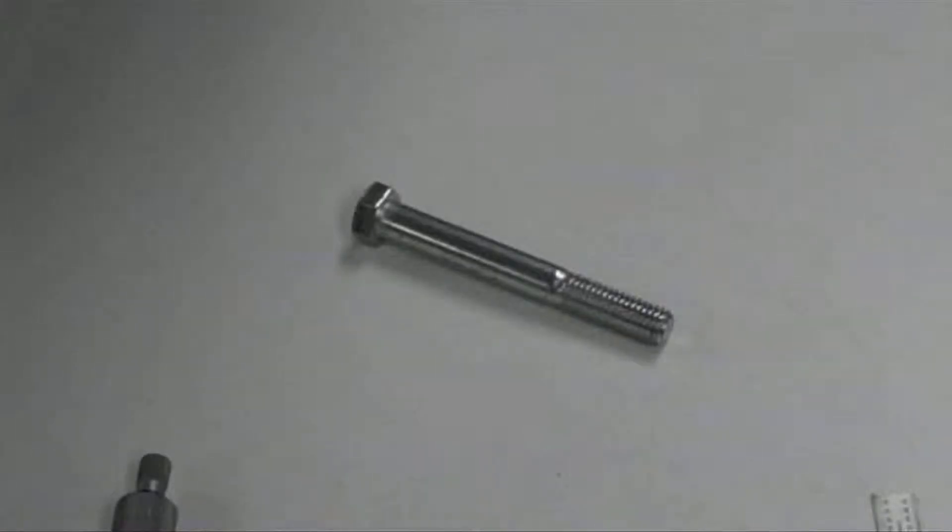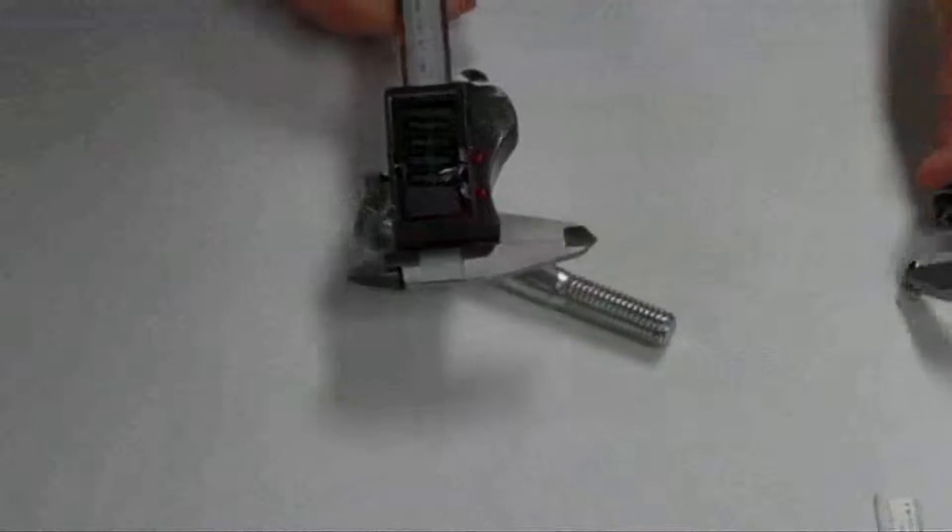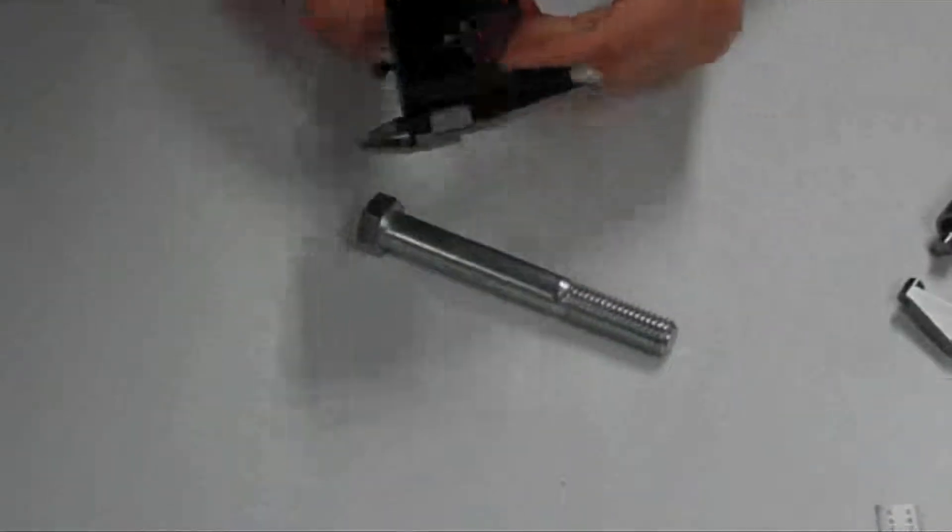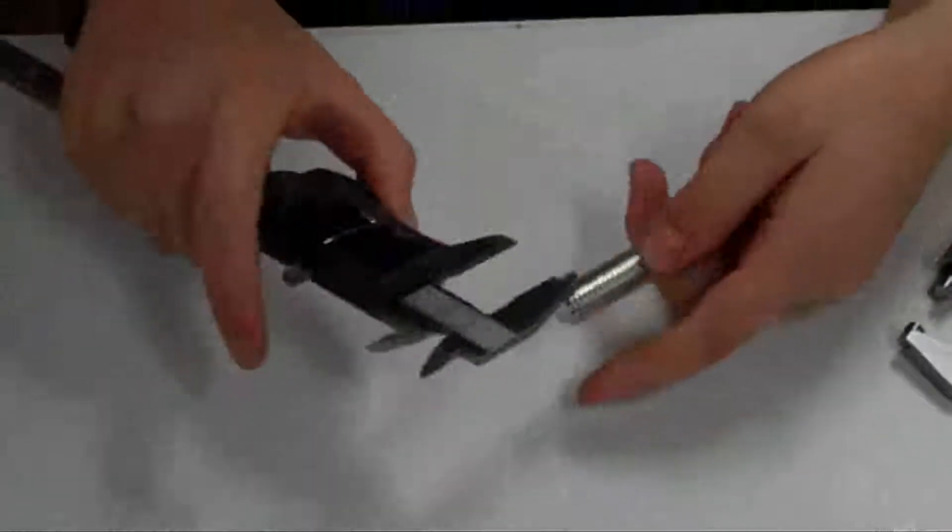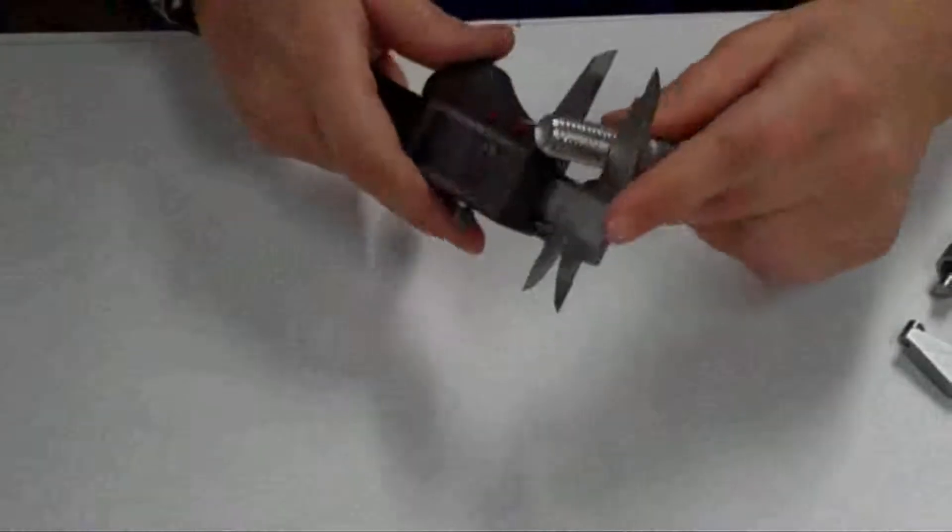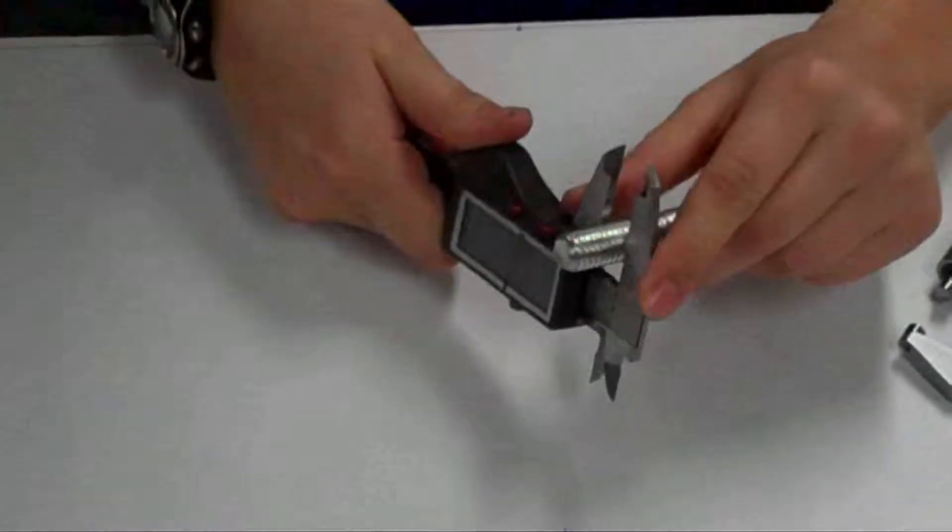Now that you know the terminology, here's how you can determine the size of the thread. First, using micrometer or calipers determine the actual outer or major diameter of the male screw thread. If you need help using a micrometer or calipers, please see our tutorial on measurement.